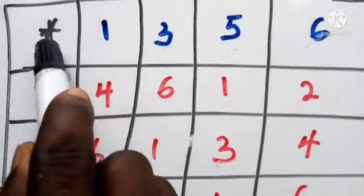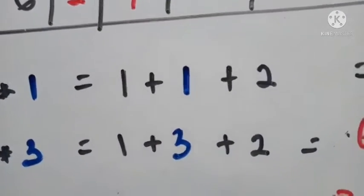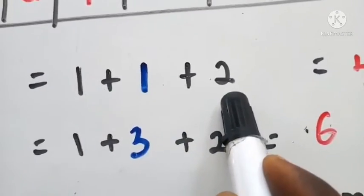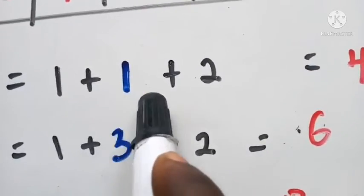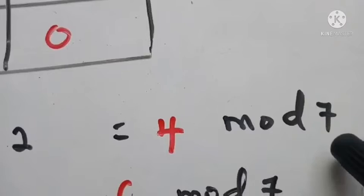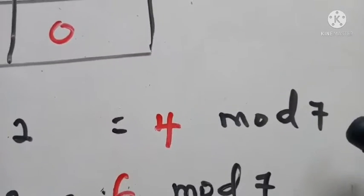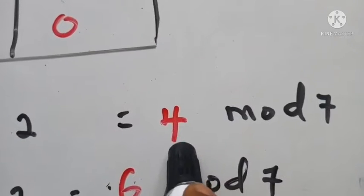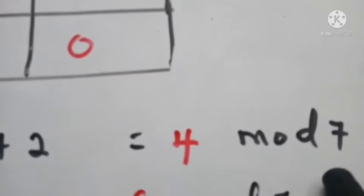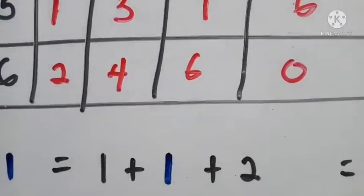Let's calculate 1 ★ 1. The law says: first person plus second person plus two, so 1 + 1 + 2 = 4. Remember, in mod 7 you only give out seven. Since 4 is not up to seven, they take everything as it is. So the answer is 4.